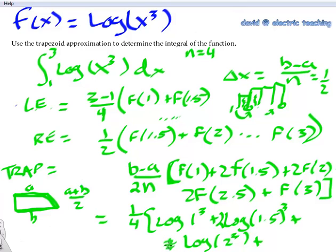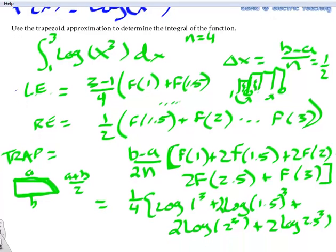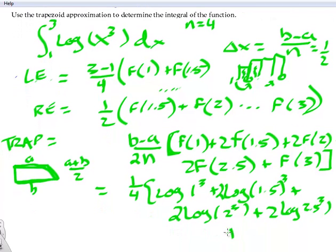Let me fix that real quick. So then that is supposed to be 2 right there. Get that fixed. Okay, and so there's 2 of those, and then finally, 2 of the 2.5s, 2 of the log of 2.5 cubed, and finally, one more of the single log of the endpoint 3 cubed. Then we take out a calculator and get this approximation.